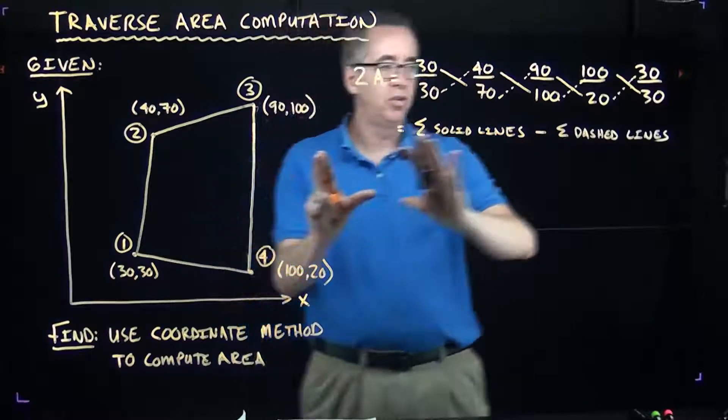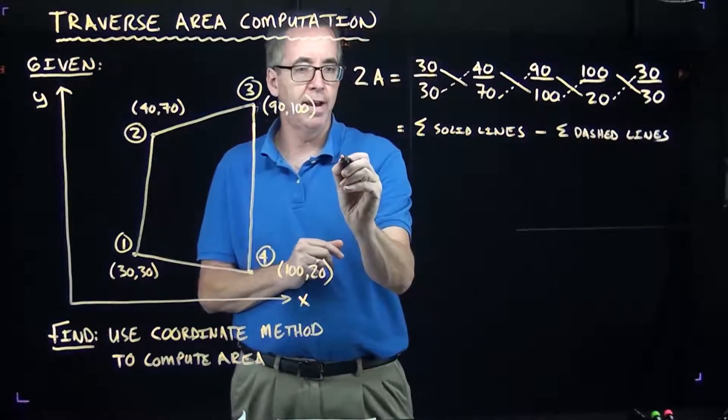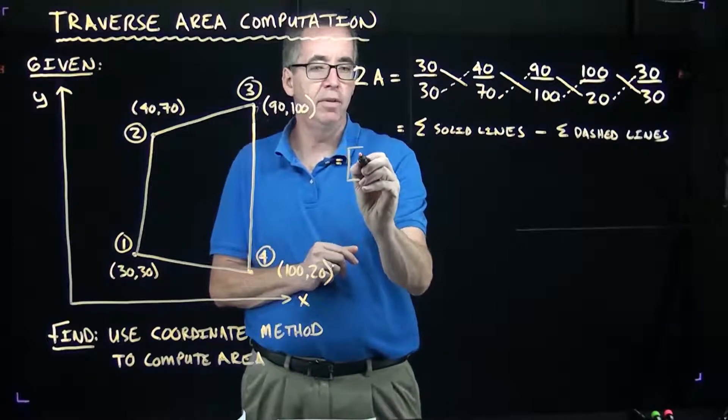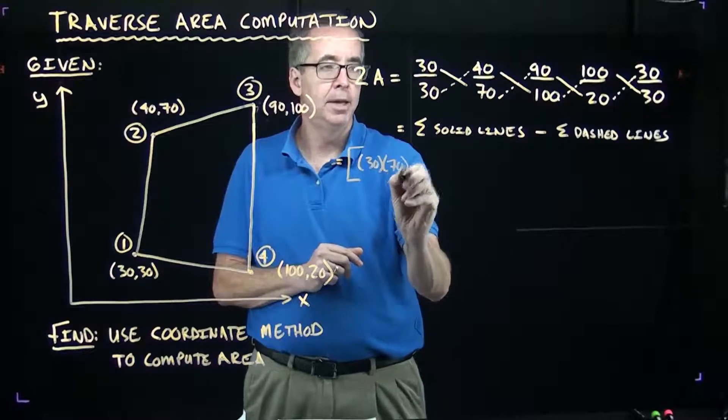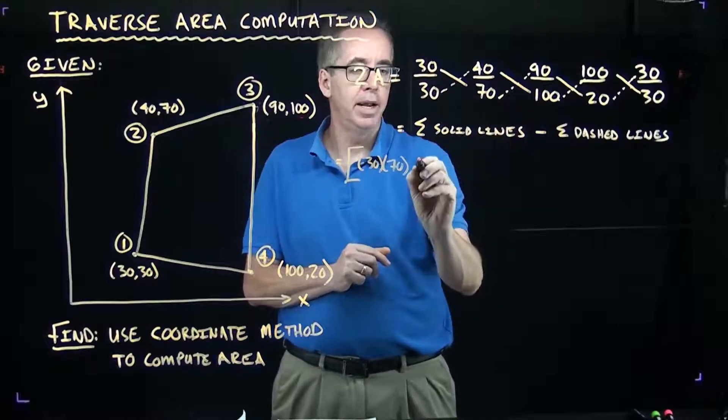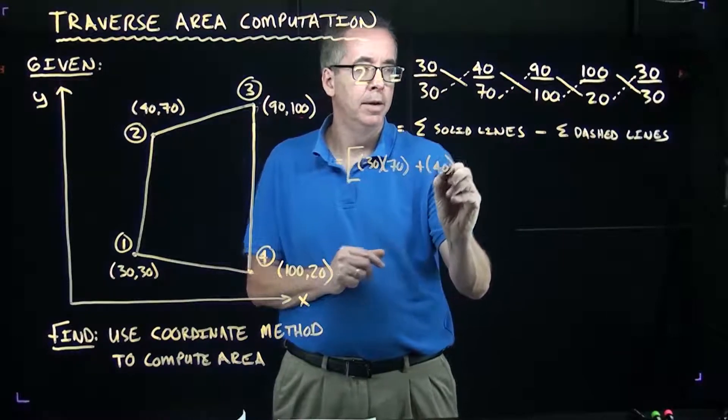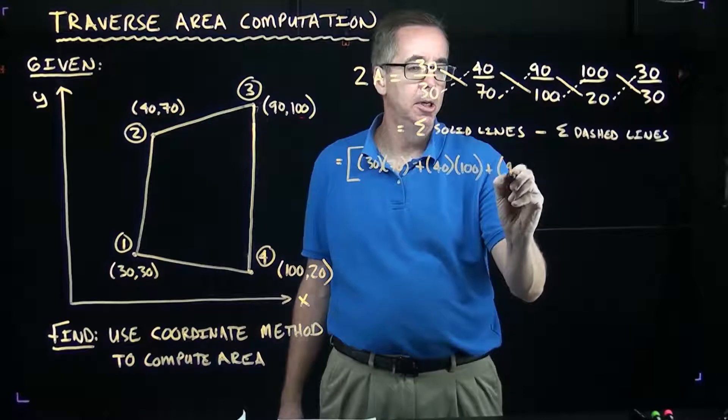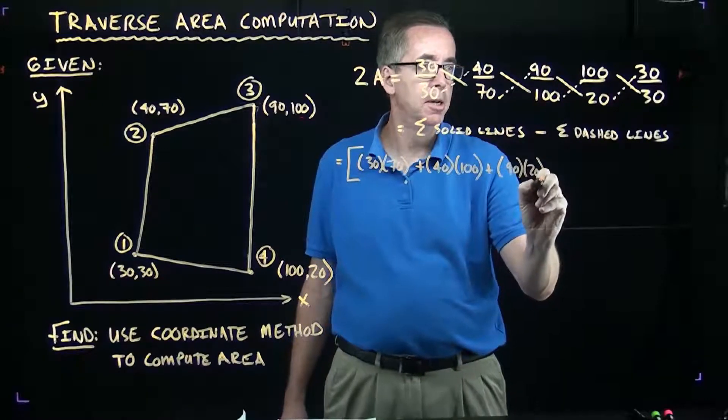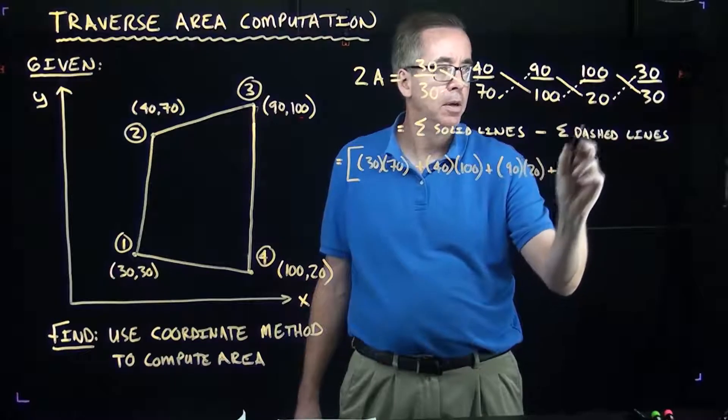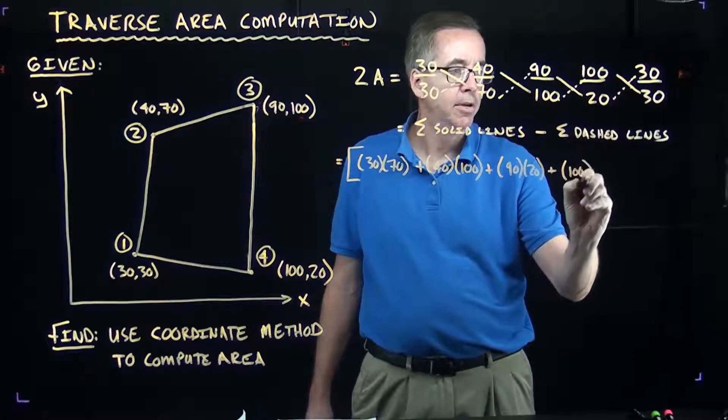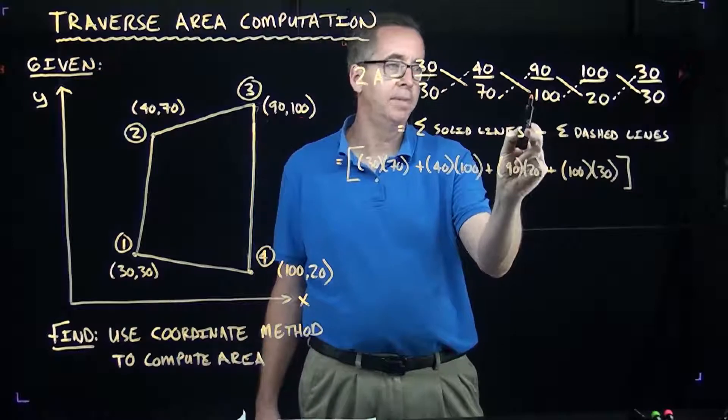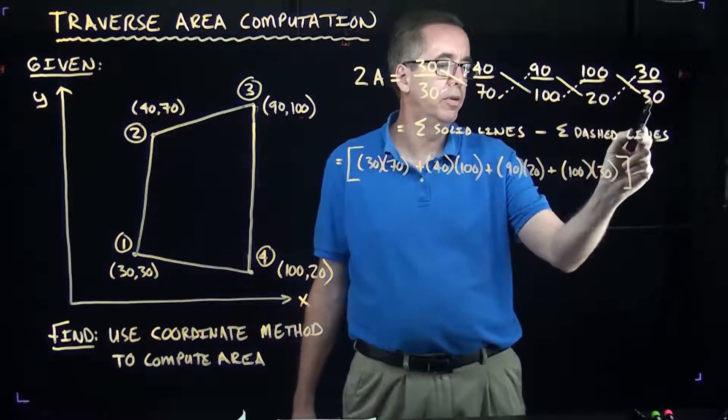I'm going to move this over just a little bit. What I have now to start with is I have 30 times 70, that's this first product. Then I'm going to have 40 times 100. My next one will be 90 times 20. And I'm going to have 100 times 30. That's all the solid lines. So, again, 30 times 70, 40 times 100, 90 times 20, 100 times 30. I have them all there.